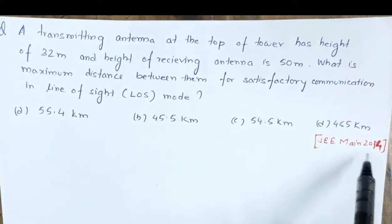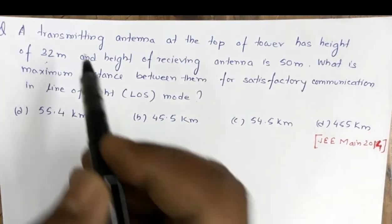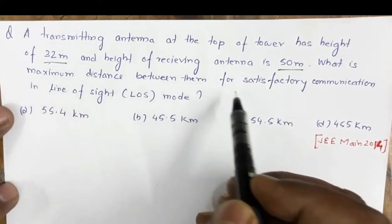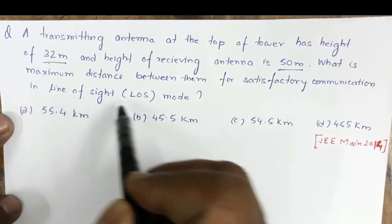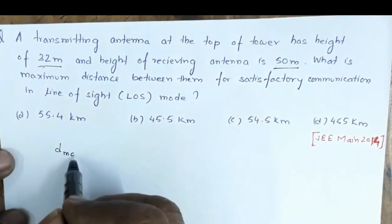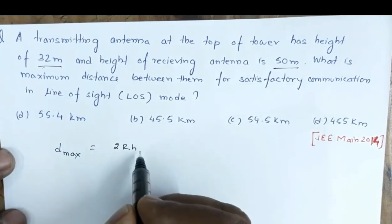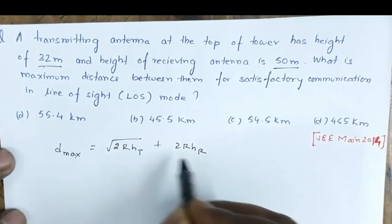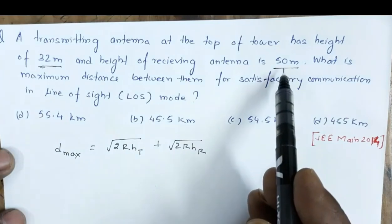This question is from JEE 2014. A transmitting antenna at the top of a tower has a height of 32 meters, and the height of the receiving antenna is 50 meters. What is the maximum distance between them for satisfactory communication in line-of-sight (LOS) mode? The maximum distance is given by d_max = √(2R·h_T) + √(2R·h_R), where R is the radius of the Earth.